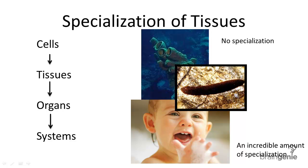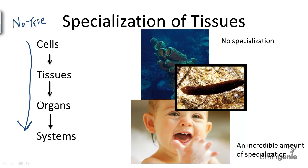What is the specialization of tissues? The specialization of tissues is the process of organisms evolving from having no true tissues to having increasingly complex anatomies with increasingly specialized cells, tissues, organs, and systems.